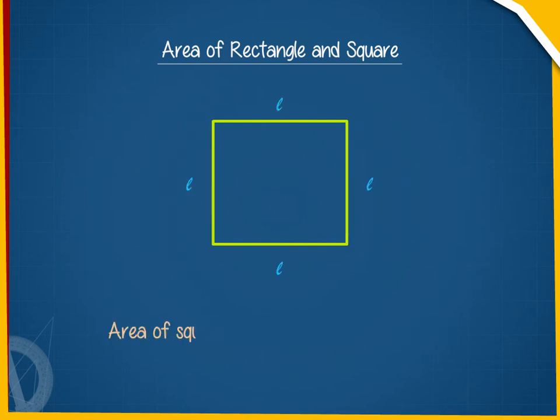Similarly, area of a square is equal to length into length, which is equal to L into L, which is equal to L square.